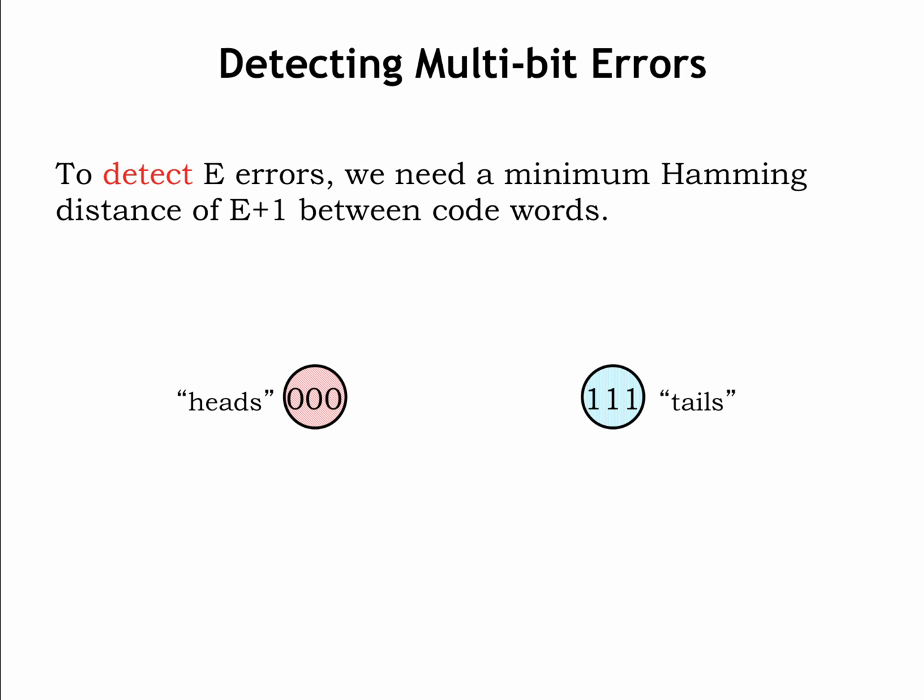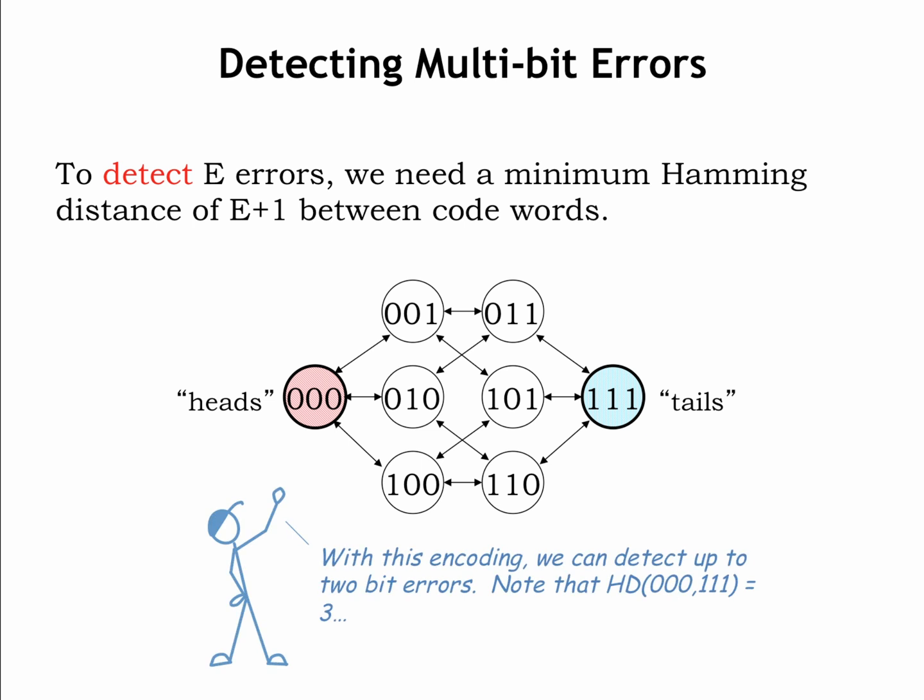We can see this graphically below, which shows how errors can corrupt the valid codewords 0,0,0 and 1,1,1, which have a Hamming distance of 3. In theory, this means we should be able to detect up to 2-bit errors. Each error represents a single-bit error, and we can see from the diagram that following any path of length 2 from either 0,0,0 or 1,1,1 doesn't get us to the other valid codeword.